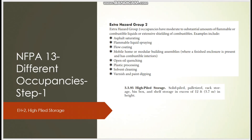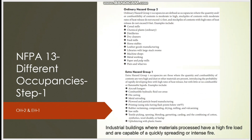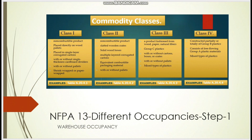High-piled storage means storage exceeding 12 feet in height. NFPA 13 has a separate section — I believe Chapters 20 to 25 — for storage occupancies, which is completely separate from light, ordinary, and extra hazard classifications. For commodity classes in storage occupancies, we have Classes 1, 2, 3, and 4 with different arrangements. I have also included the NFPA table reference. When we get to commodity design and in-rack sprinklers, I will explain this in very detailed way with practical problems.